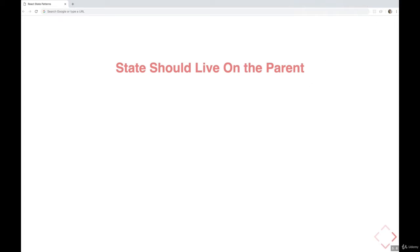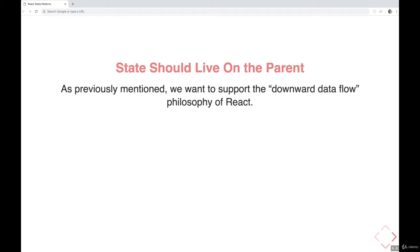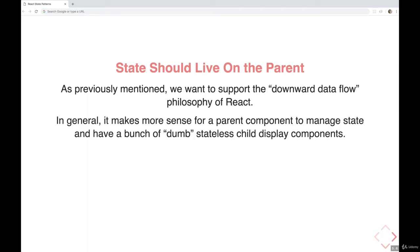That's not a hard and fast rule, but it's a general thing you should keep in mind. We want to support the downward data flow that we've talked about in React — this philosophy where parents pass data down to children. In general, parents should be more stateful. It makes more sense for a parent component to manage state and then render a bunch of dumb, stateless child components that just display those pieces passed in as props.